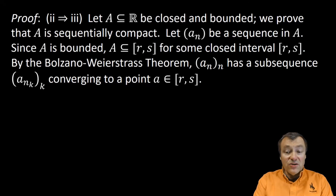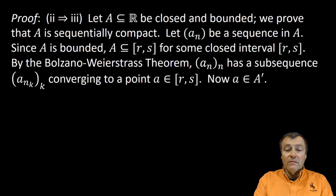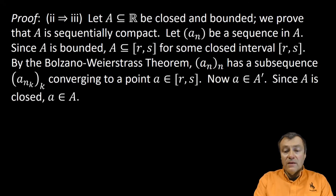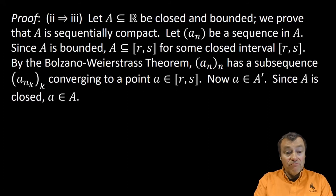We need to show that this point little a is actually in the set capital A. Well, the point little a is a limit point of capital A, and the set capital A is closed. So, little a is in capital A. This proves the result in the forward direction.